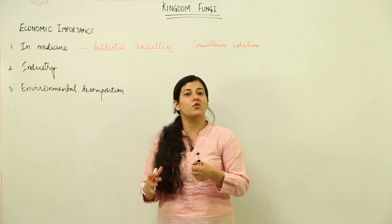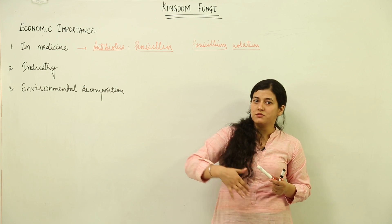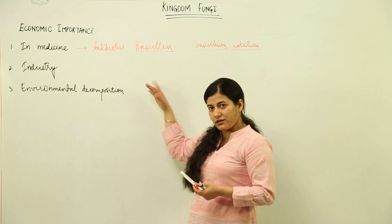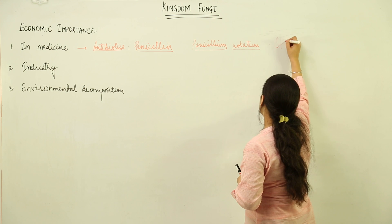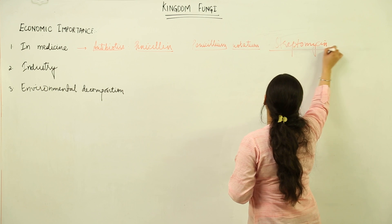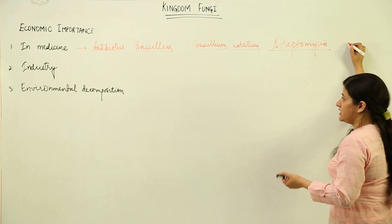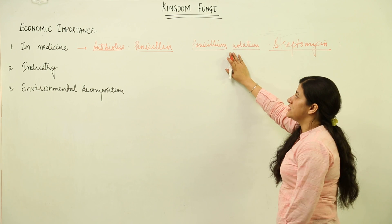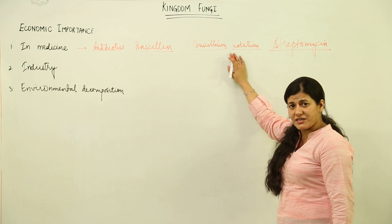Fleming discovered penicillin along with two other scientists and was awarded the Nobel Prize, because antibiotics are of great medicinal importance. Penicillin is a very strong antibiotic. Apart from that, we have another antibiotic, streptomycin, taken from Streptomyces, which is used against gram-negative bacteria that penicillin cannot cover. So the medicine industry thrives on various fungi for production of antibiotics.